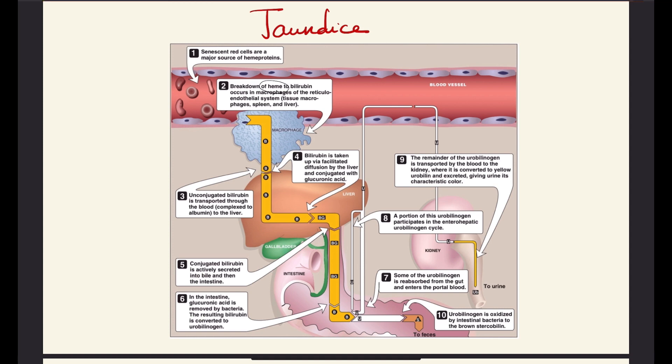In the intestines, the bacteria result in the conversion of bilirubin to urobilinogen. Now urobilinogen can go into different pathways. One, it can be taken up by the liver again and then secreted again, as part of the enterohepatic cycle. So we have the enterohepatic cycle in which the bile itself goes through, and the urobilinogen goes through it as well.